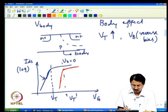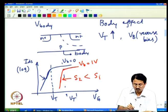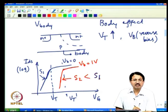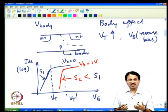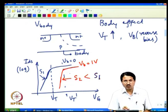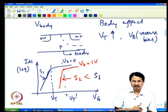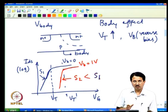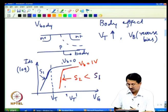The sub-threshold slope S2 at VB = 1 V will be less than S1 at VB = 0, because depletion capacitance has gone down, decreasing the Cd/Cox term. However, this improvement comes at the expense of increased threshold voltage, which degrades on-current. So although you can decrease sub-threshold slope using body bias, you also suffer in terms of degraded on-current, making this technique not always preferred.